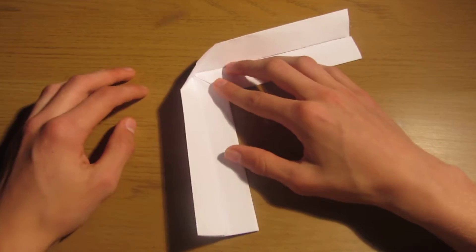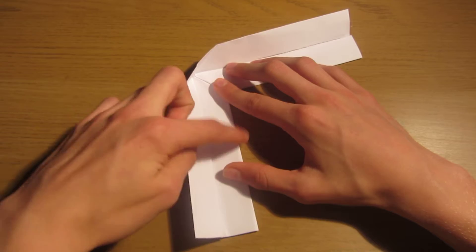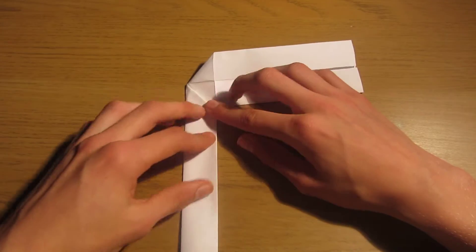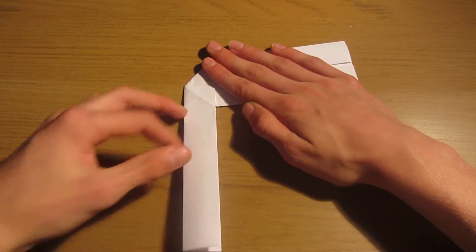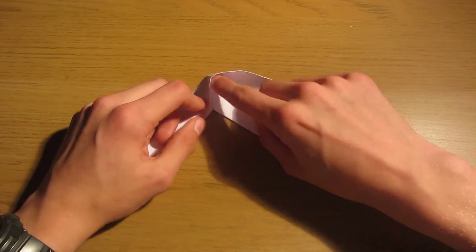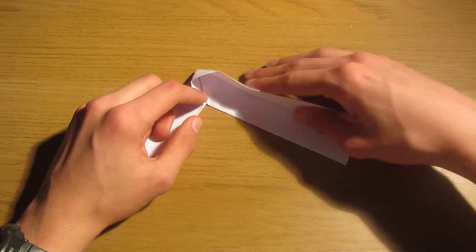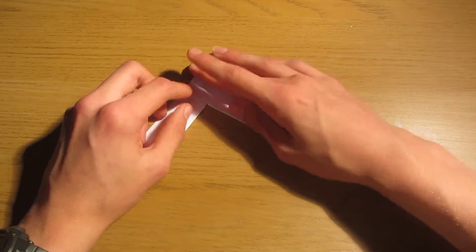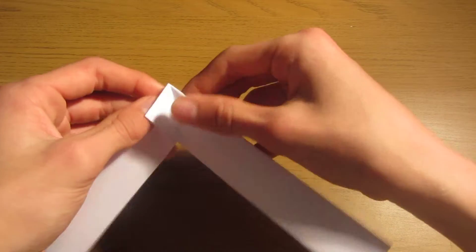Okay, the next step we're going to do is we're going to fold this edge to this edge. Like this. And this edge too. We're going to lift this flap up. And then fold this in. And then flatten it. So we have a little flap here.